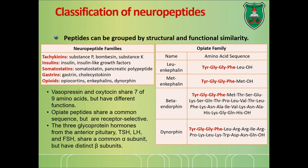There are different types of neuropeptides that can be grouped as shown in a table — tachykinins, insulin, somatostatins, gastrins, and opioids. They can have different structures and functions.